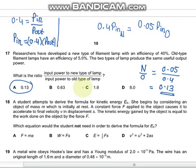The input power for the new one is 0.4 times P out, and for the old one it's 0.05 times P out. So 0.4 times P in new and 0.05 times P in old. The ratio of new to old is 0.05 by 0.4, which is 0.13, so A is the appropriate answer.